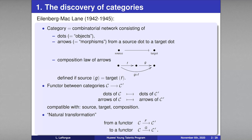The definition of a category is very simple. The next definition introduced by Eilenberg and Mac Lane is that of a functor — a way to go from one category to another, transforming dots into dots and arrows into arrows in a way compatible with sources, targets, and composition laws.